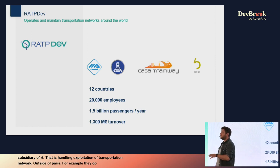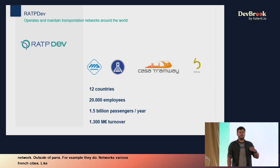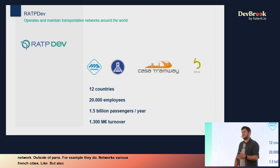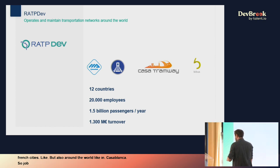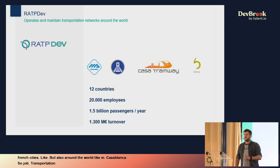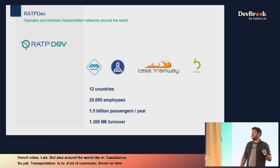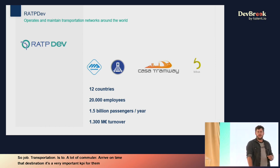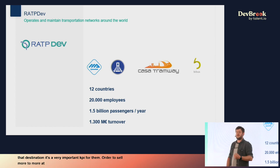For example, they operate networks in various French cities like Angers, Valenciennes, and Brest, but also around the world, like in Manila or Casablanca. The job of a transportation network operator is to ensure a lot of commuters arrive on time at their destination. This is a very important KPI for them in order to win more contracts with networks around the world.